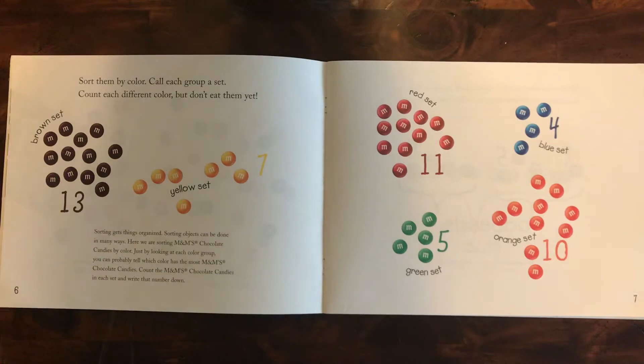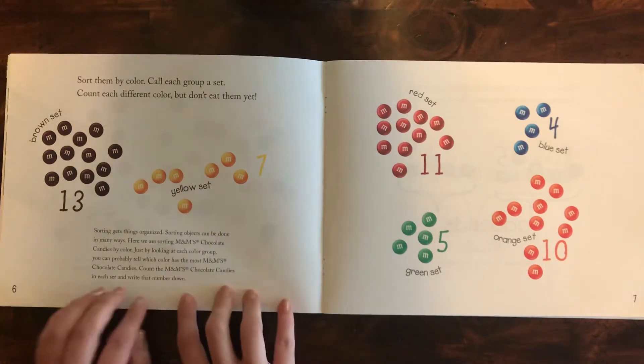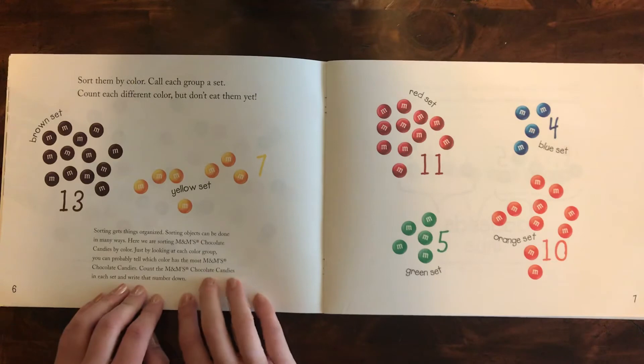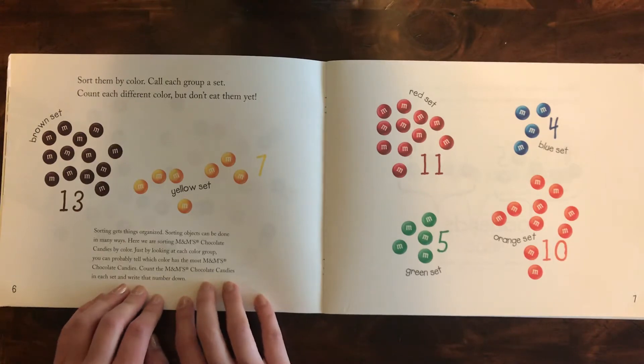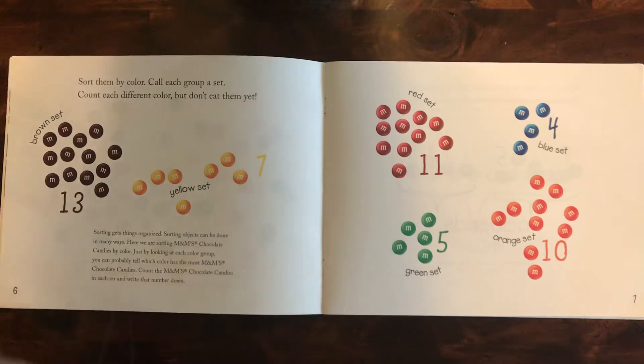Sort them by color. Call each group a set. Count each different color but don't eat them yet. Sorting gets things organized. Sorting objects can be done in many ways. Here we are sorting M&M's by color. Just by looking at each color group you can probably tell which color has the most M&M's. Count the M&M's in each set and write that number down.